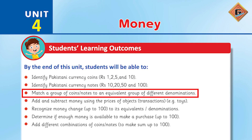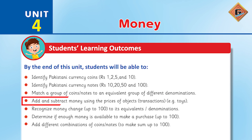Denomination is basically the value of something. When you have coins worth a certain rupee amount, that value is what you receive in exchange. Students will be able to add and subtract money using the prices of objects and perform transactions.